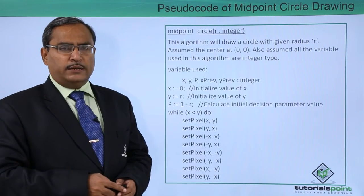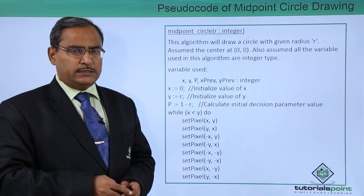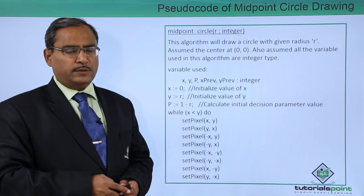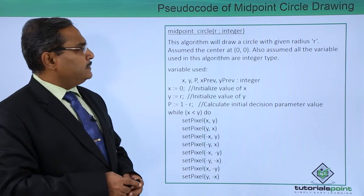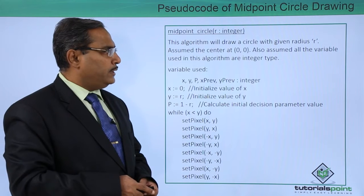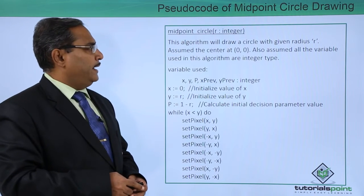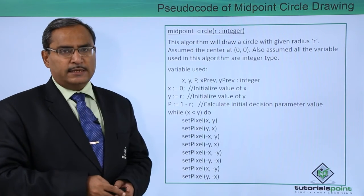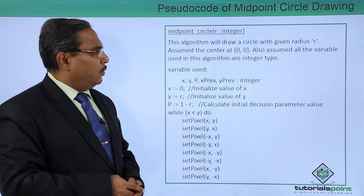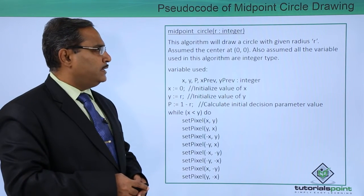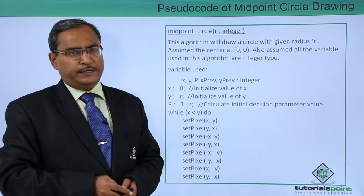For the midpoint circle algorithm, R will be integer type, denoting the radius of the circle to be drawn. This algorithm will draw a circle with given radius R, and assume the center is at (0,0), that means at the origin. Also assume all variables used in this algorithm are of integer type.